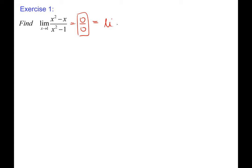Exercise number one: the limit as x goes to 1 of (x²−x)/(x²−1). When I substitute 1, I get zero over zero. Since we have a ratio of the same type of functions, we don't even have to use L'Hôpital's Rule — we can use algebra. I can factor out x in the numerator and factor x²−1 = (x−1)(x+1) in the denominator. The common factor cancels, leaving x/(x+1), which at x=1 gives 1/2.